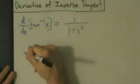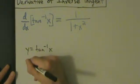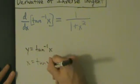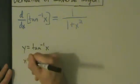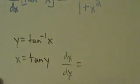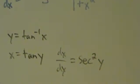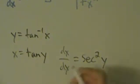Let's start by saying y equals inverse tangent of x. Right away, that just means x equals tangent of y. So if x equals tangent of y, then dx/dy — the derivative of x with respect to y — equals secant squared of y, because the derivative of tangent is secant squared. Here we have x as a function of y instead of the other way around.